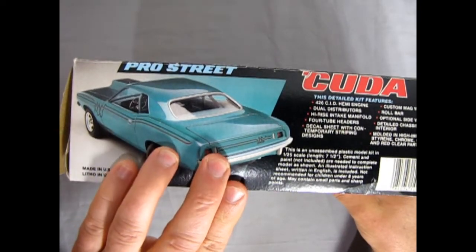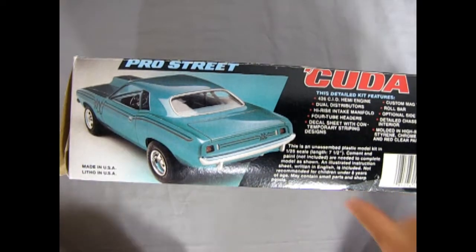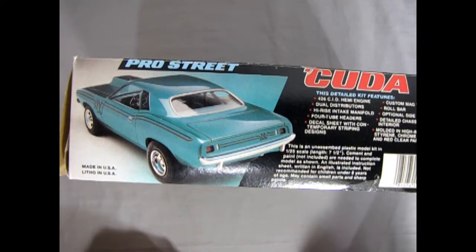And then here we've got the low down on all our bits. So this detail kit features a 426 cubic inch Hemi, dual distributors, high rise intake manifold, four tube headers, decal sheet with contemporary striping designs, custom mag wheels, roll bar, optional side windows, detailed chassis and interior.